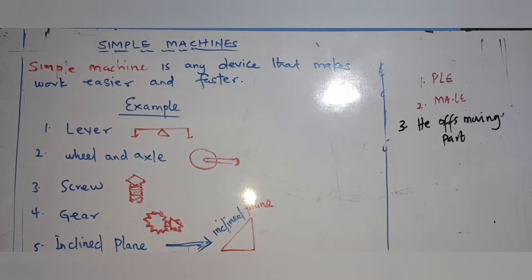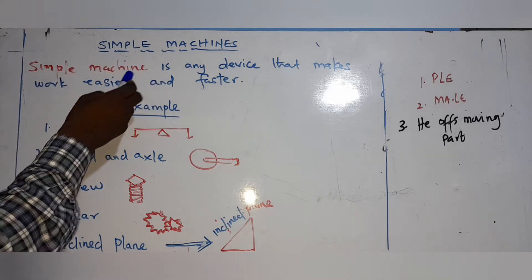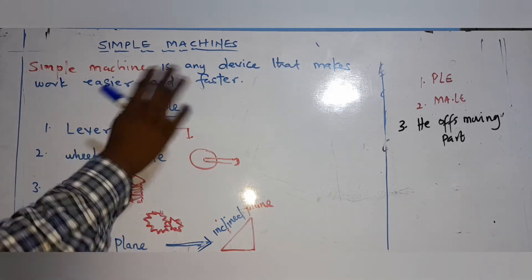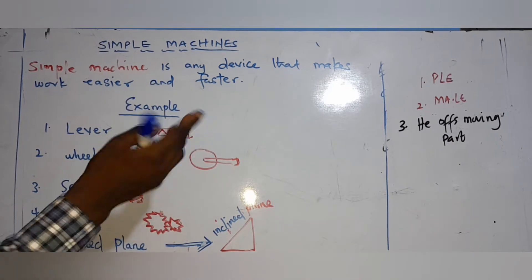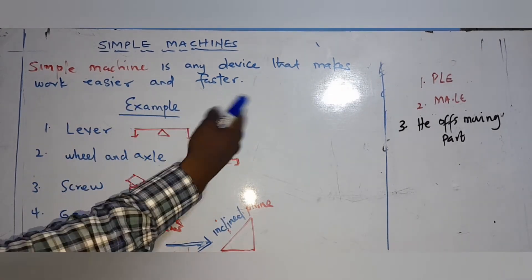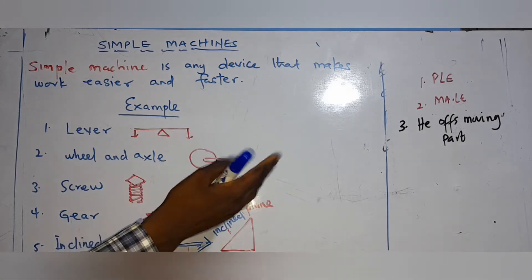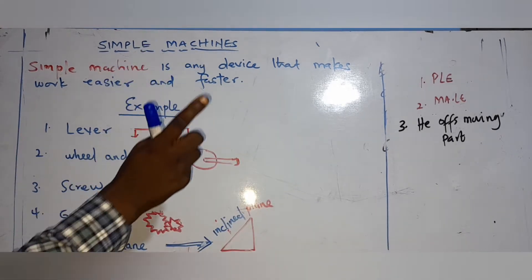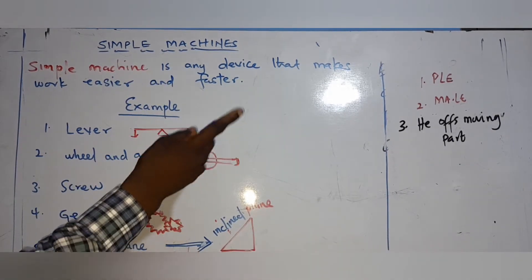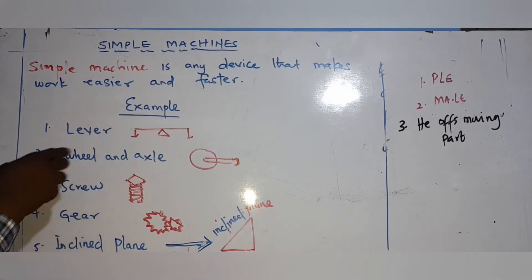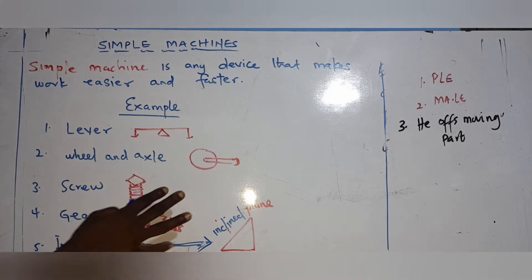So basically we are looking at simple machines. A simple machine is any device that makes work easier and faster. For instance, a broom is a simple machine because it helps you to make work easier, and we'll see as we continue that broom is a part of the lever. So we have some examples of simple machines.